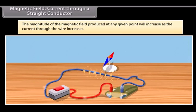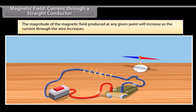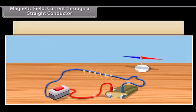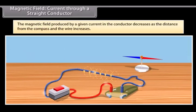Now, try moving the compass away from the current passing through the wire. You will see that the magnetic field produced by a given current in the conductor decreases as the distance from the compass and the wire increases.